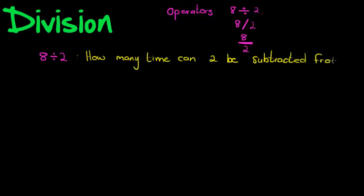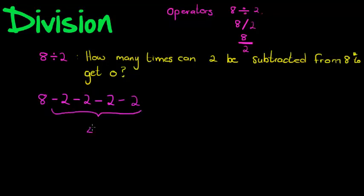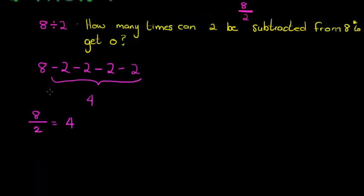If I take 8 and subtract 2 once, I get 6. Minus 2 again, I get 4. Minus 2 again, I get 2. Minus 2 again, I get 0. So how many times can it be subtracted? Four times. So 8 divided by 2 equals 4. Division means how many times can it be subtracted from a number to get 0.